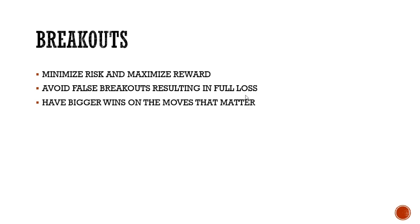If it turns around you lose 1.5%, but if it goes in your direction you can win two times your position size — a 2:1 risk-to-reward now becomes 6% of your account. You can minimize your risk, maximize your reward, and avoid false breakouts resulting in a full loss. If you enter a third or half your position and add as the breakout is confirmed — maybe on a candle close outside the range — that's your confirmation to add more.